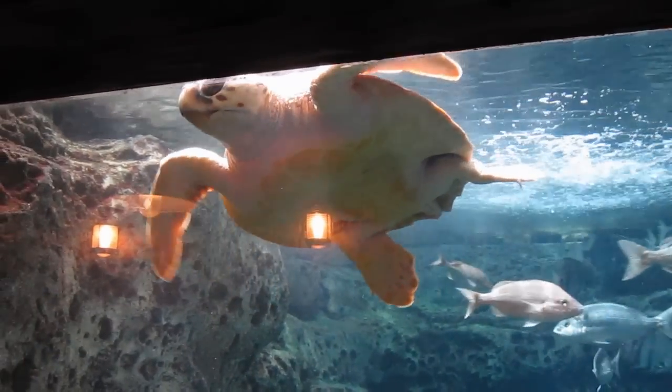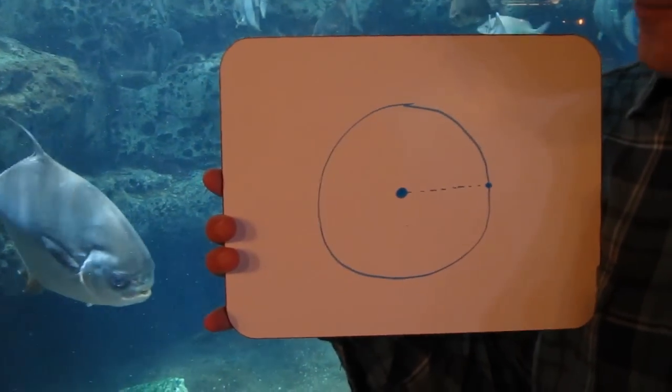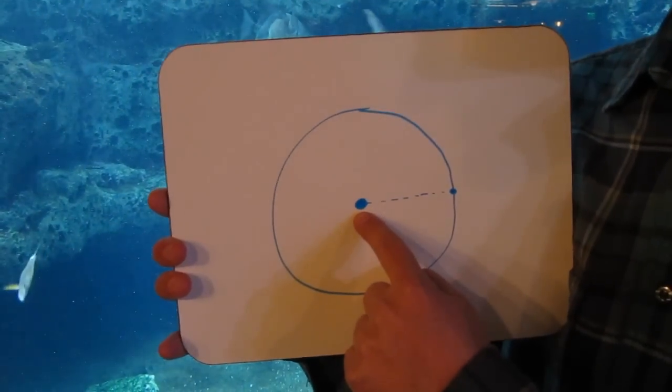This is a loggerhead sea turtle. And this is a circle. Now you may be fairly familiar with circles. They have a few parts. Right here is called the center of the circle.